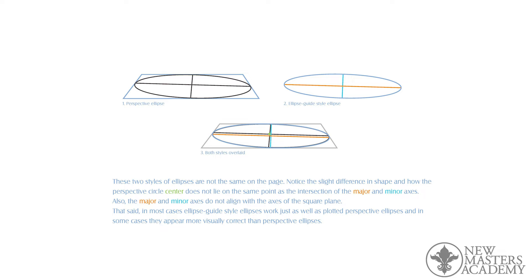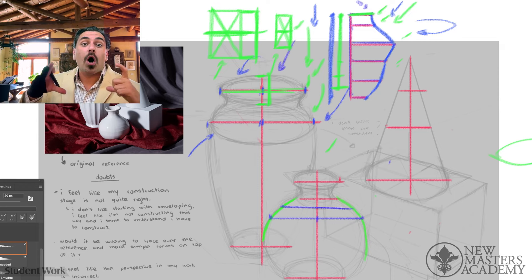The only case where you would want to use a perspective ellipse is if you had an extreme perspective and then the ellipse, you wanted it to distort. You usually don't want that.